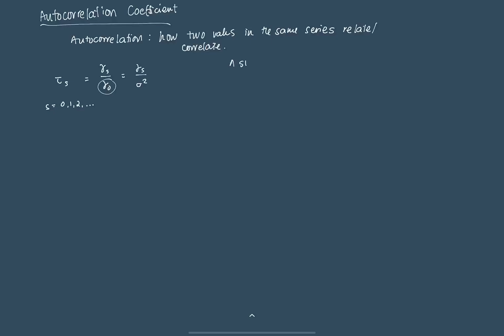As such, for example, say that s is equal to 0. When we set s equal to 0, we're going to be getting tau_s equals gamma_0 over gamma_0. That's just sigma squared over sigma squared, that's just equal to 1.